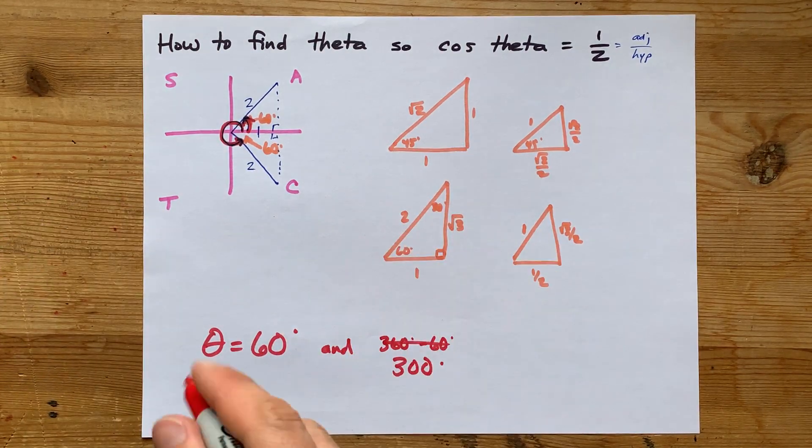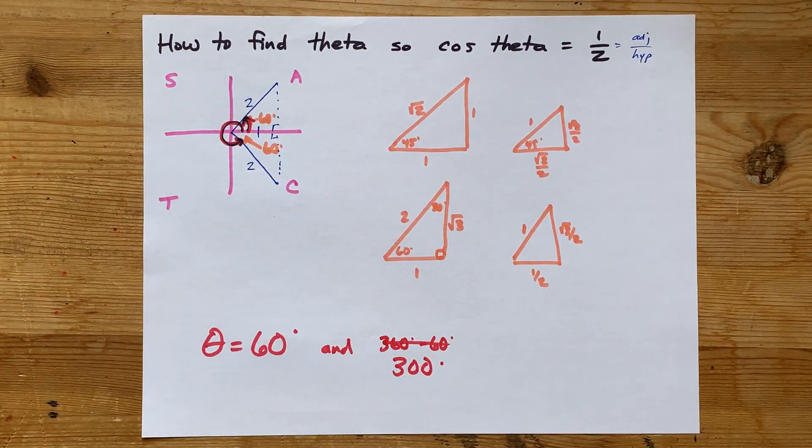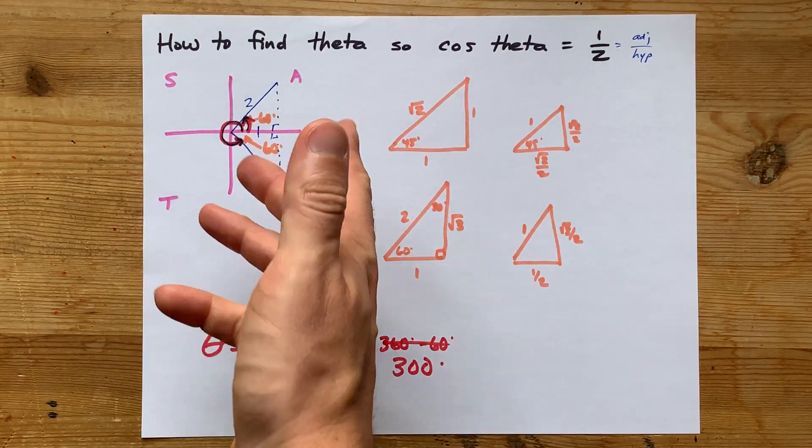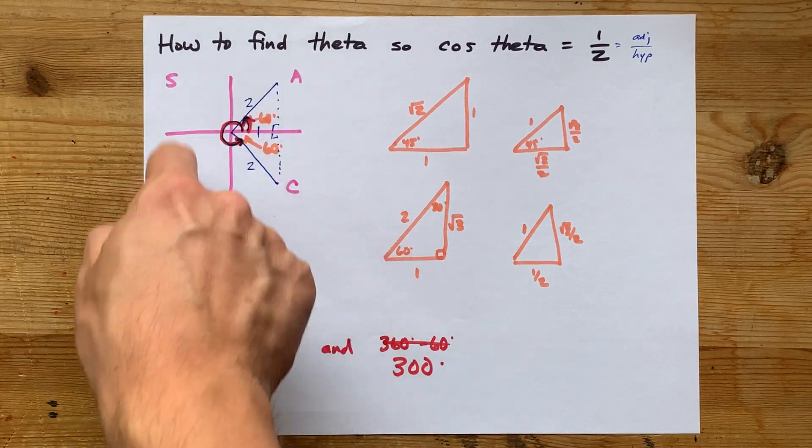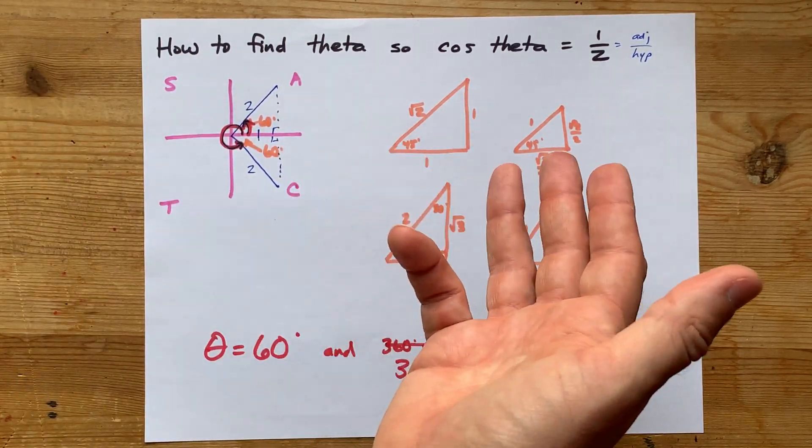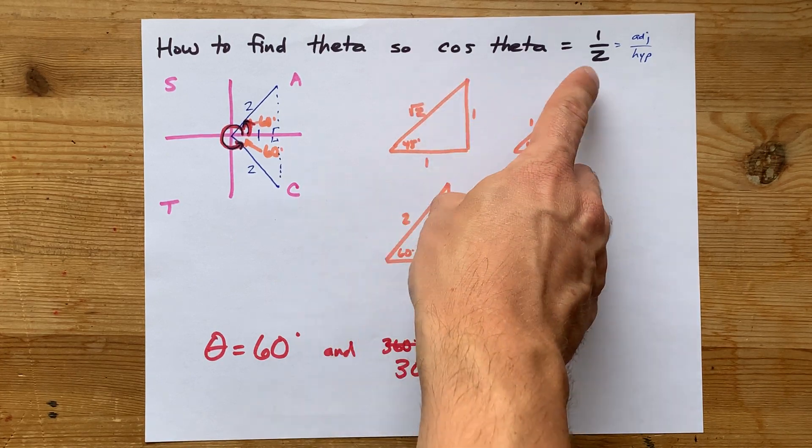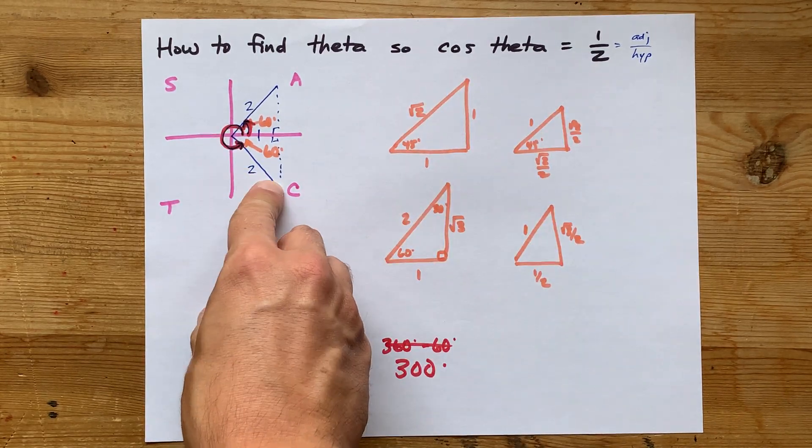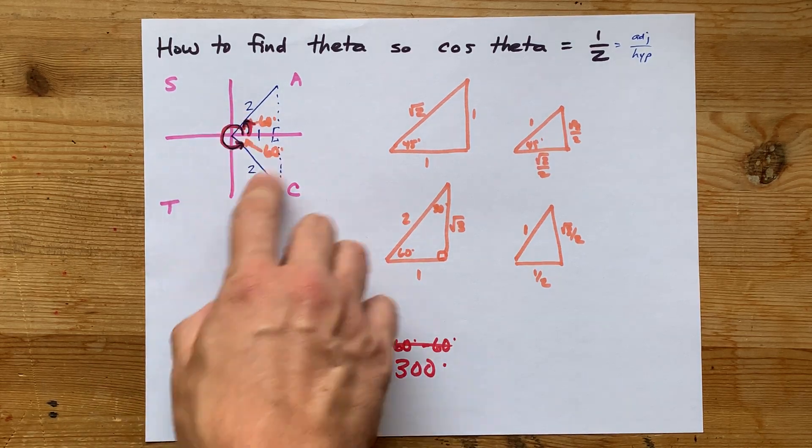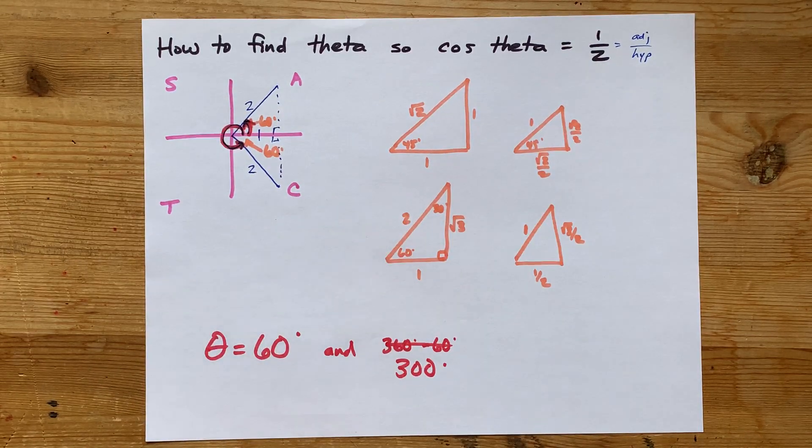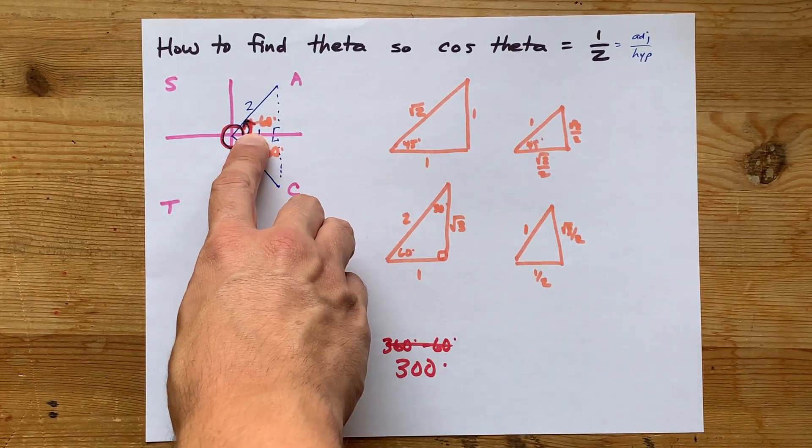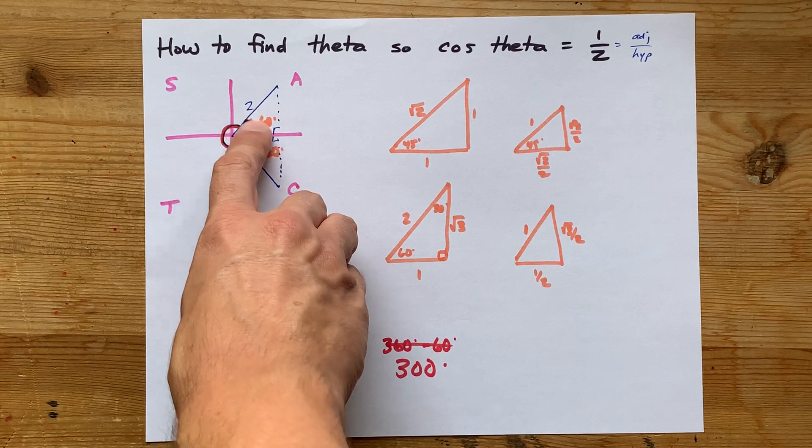The point is, how do you solve these kinds of equations? I draw two terminal arms wherever the CAST rule, C-A-S-T, says that my trig ratios are the proper sign. Here I wanted cos to be positive, so I put it in the C quadrant and the A quadrant. Then I labeled my side lengths and tried to find a special triangle that actually corresponded to those side lengths.